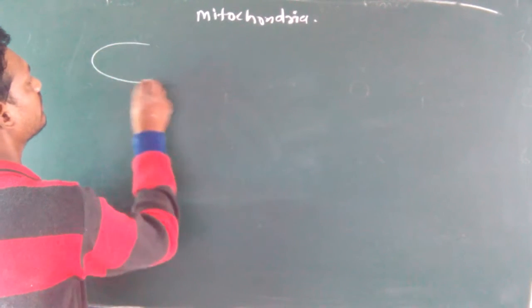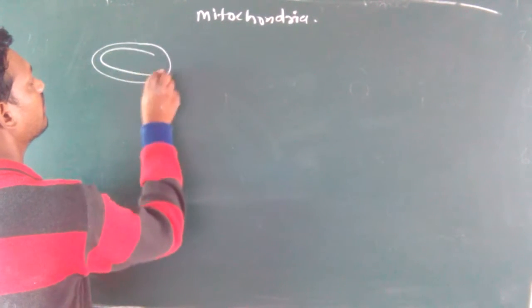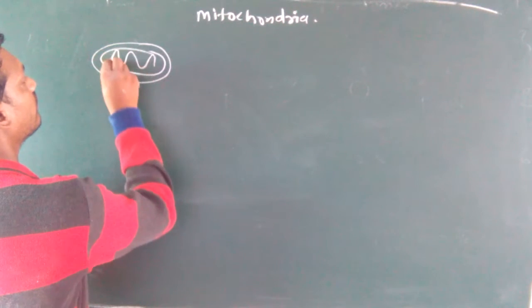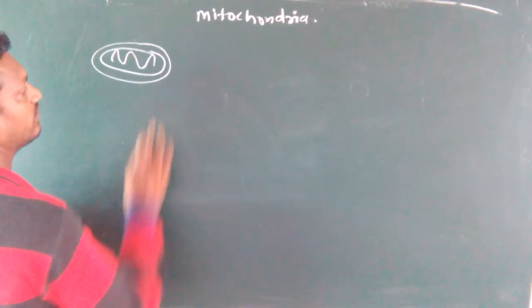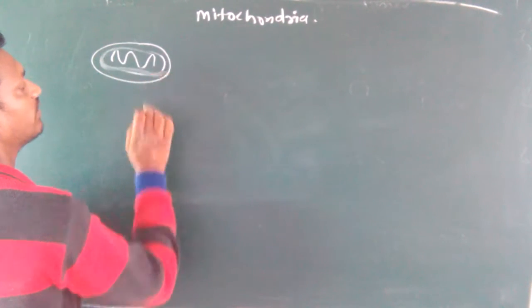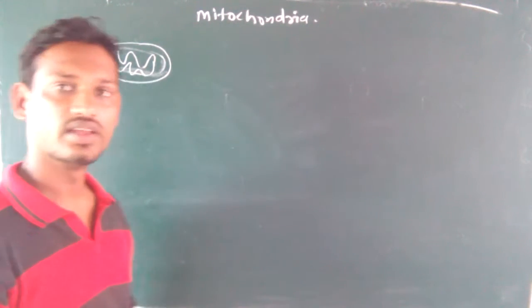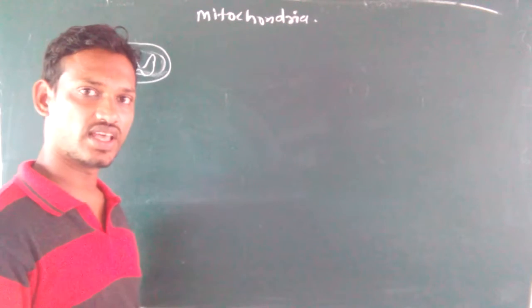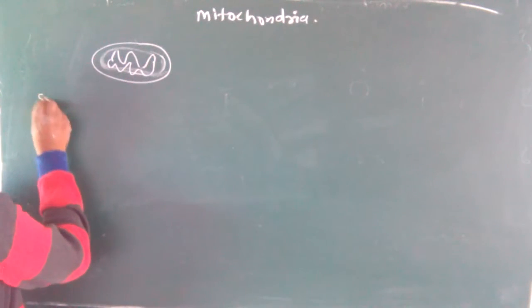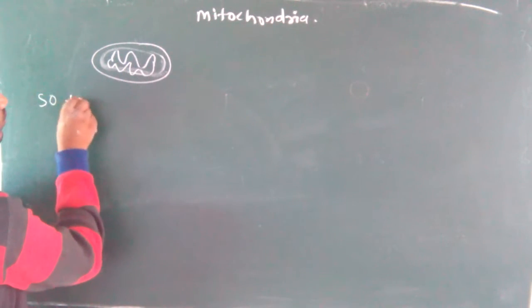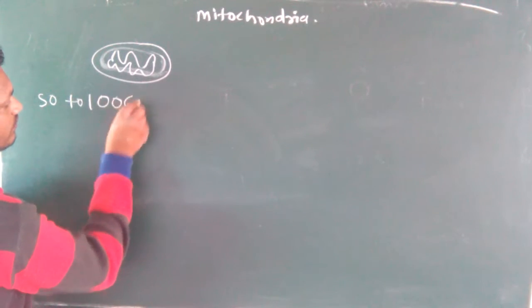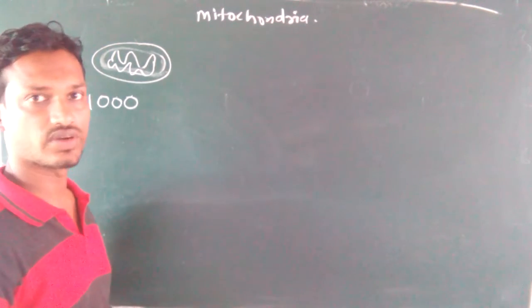The mitochondria is a double membrane bonded cell organelle composed by the double membrane. In a specific cell, the mitochondria count ranges from 50 to 1000. These are the mitochondria.